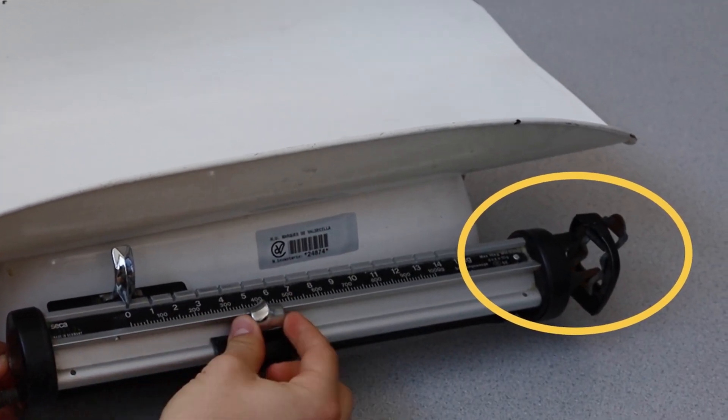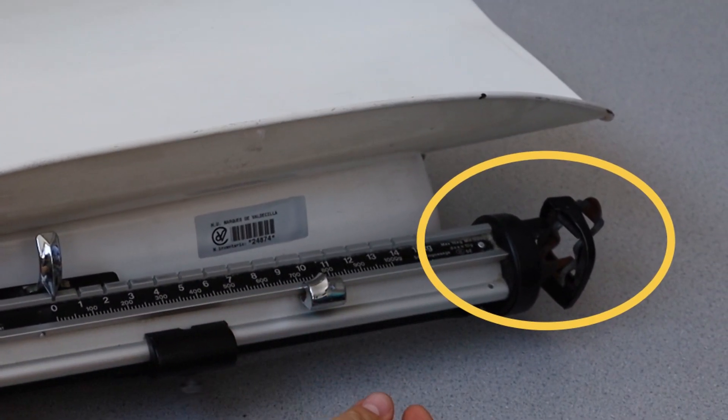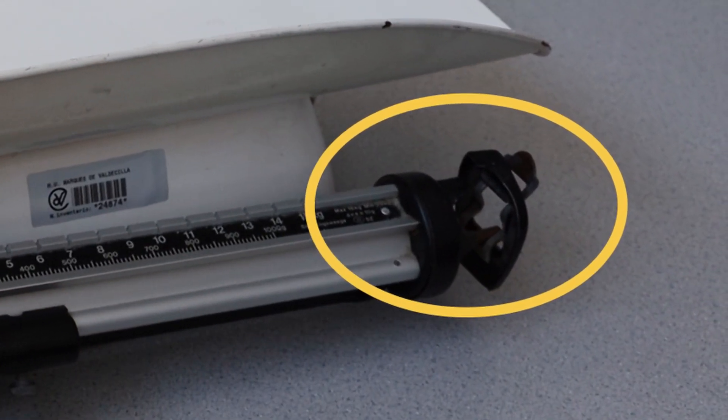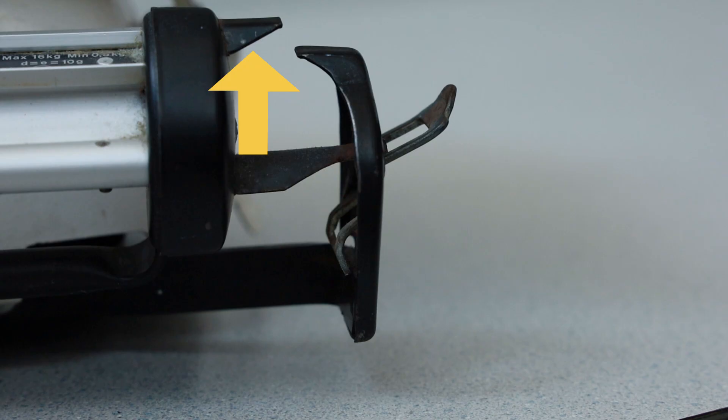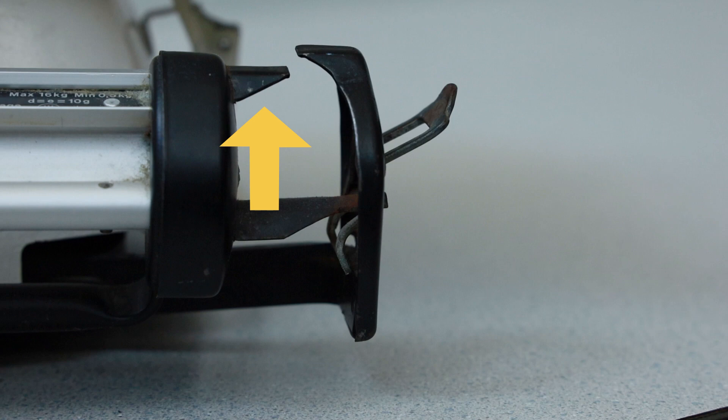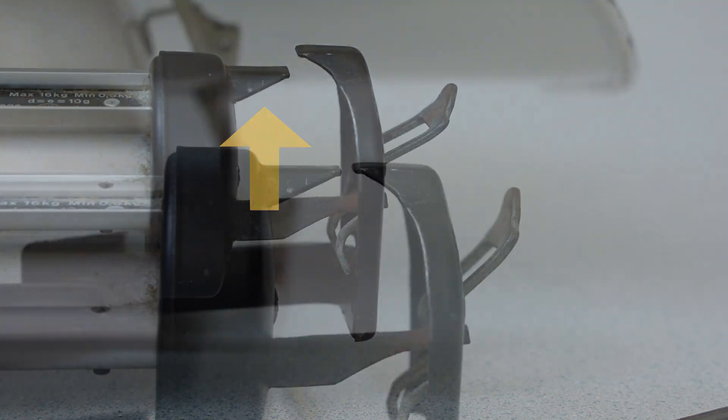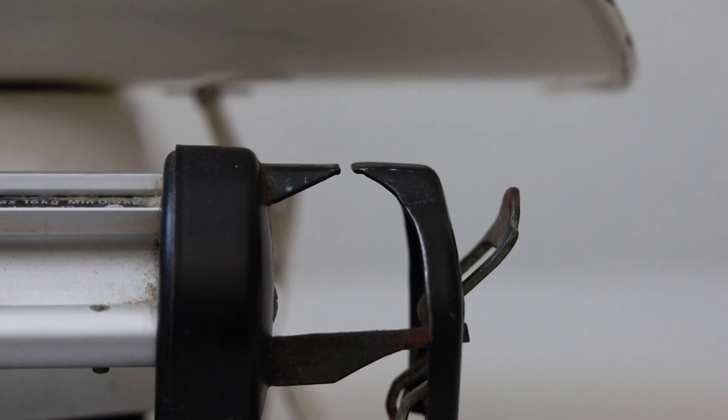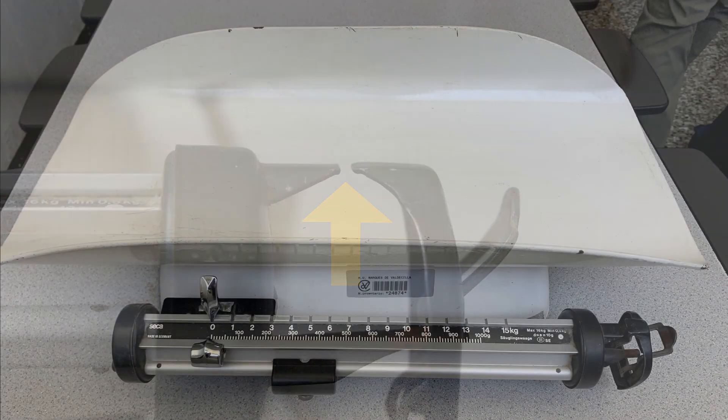The beam balance moves up and down and shows whether the position of the sliding weights match the baby's weight. When the beam is high, the baby is heavier than the sliding weights show. When the beam is low, the baby is lighter than the sliding weights show. When the effect of the unknown infant weight and sliding weights match, the beam balance will be horizontal and the pointer and counter pointer level.